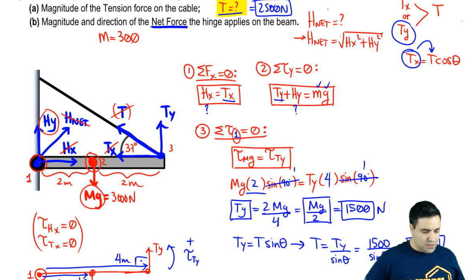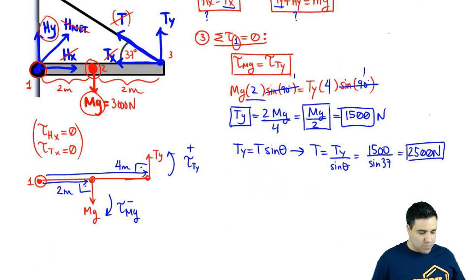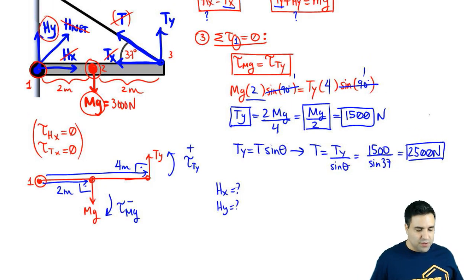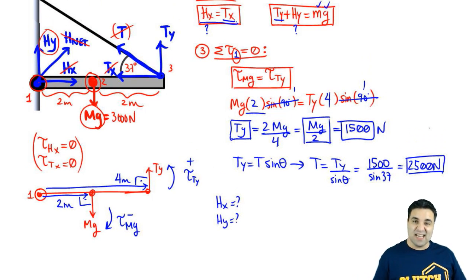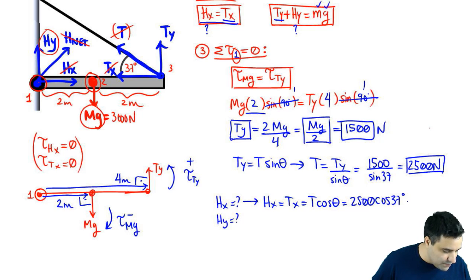Now we want to know H net. To know H net, I need Hx and Hy. So let's look for Hx and let's look for Hy in no particular order. Notice from this equation over here that Hx is Tx. I don't know Tx, but I can get it. Now I can get it. So Hx is Tx, which is T cosine of theta, which is 2,500, we just got that, cosine of 37. And if you plug all of this in, you get that this is 2,000 Newtons.